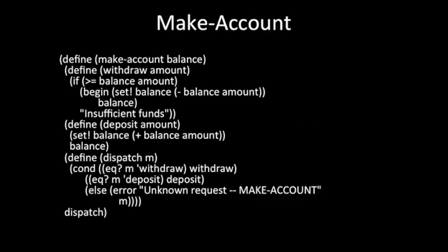Let's take a look at the problem. We will be using the following code for make-account. Make-account basically creates a procedure object that takes an input balance. This procedure object calls a dispatch function, which takes one of two inputs: a withdraw or a deposit. This calls one of two subfunctions — withdraw and deposit — which take an amount as input, and then update the balance in your account.